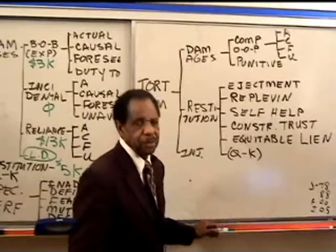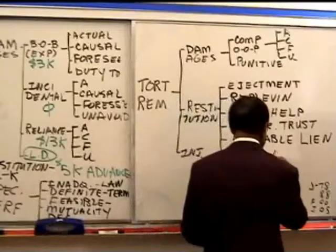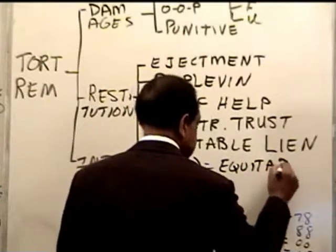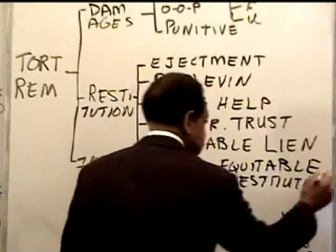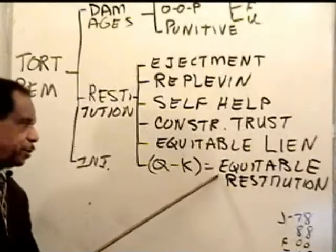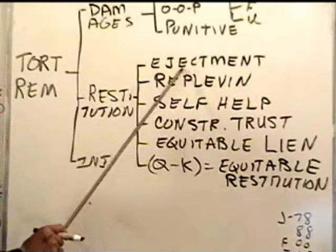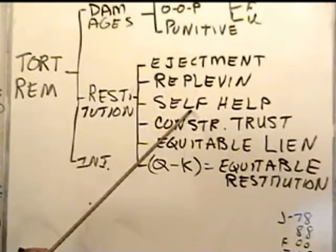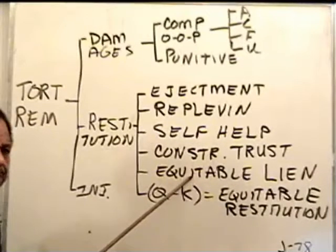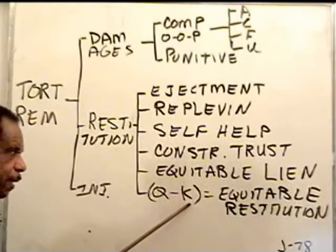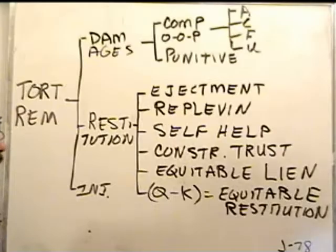This action has a couple of names. One name is quasi-contract — you can see why, because it is a device to prevent unjust enrichment, and quasi-contract is a broad term used for almost anything that prevents unjust enrichment. Getting that $1,000 from Joe is often called a suit for quasi-contract. It's got another name: equitable restitution. You need the term 'equitable' because it's not ordinary restitution. Restitution is when you get people back their stuff — ejectment, replevin, self-help, constructive trust, equitable lien. Here in equitable restitution, I'm not getting my own stuff back; I'm just keeping Joe from keeping it.